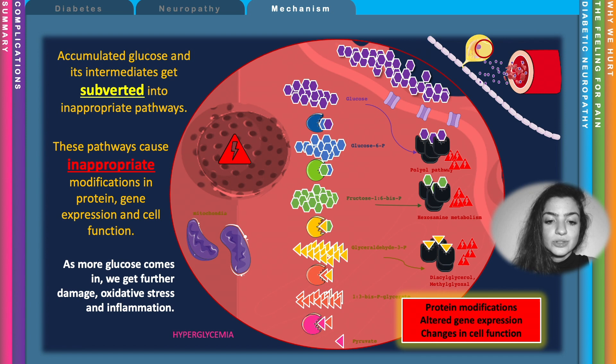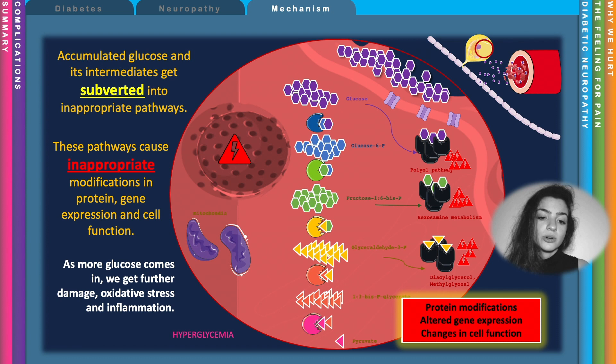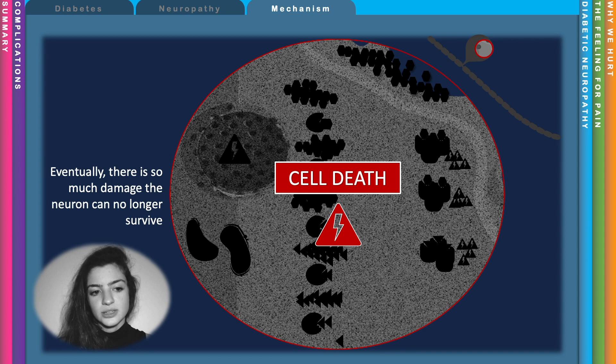Glucose is a very powerful molecule — that's where we extract all of our energy from. If we cannot channel all this energy into appropriate machinery, it will cause a lot of damage in the cell. So eventually we get oxidative stress, inflammation, and permanently damaged proteins, and eventually the cell dies.